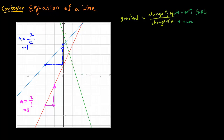Finally, we have a green line over here. If I take this point and this point, we can see that it is running one unit, but it is falling this time — falling by three units. That means the gradient is minus three. We write the minus to denote that it is falling, it is decreasing, and x is increasing by one unit. So the formal definition: the gradient M of a line is y2 minus y1 divided by x2 minus x1.